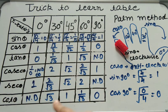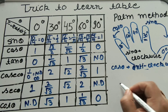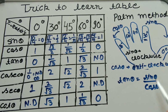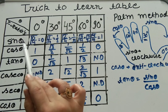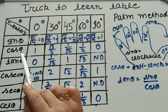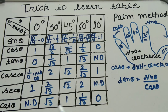With both the Tricky method and the Palm method you can solve this trigonometric table. Once you have sin theta and cos theta values, you can find tan theta by dividing sin by cos. Cosecant theta is the reciprocal of sin theta. Secant theta is the reciprocal of cos theta. Cot theta is the reciprocal of tan theta.